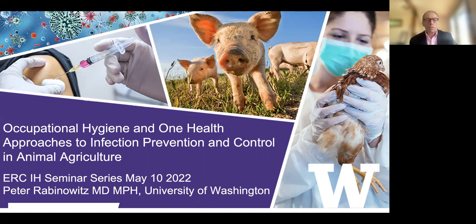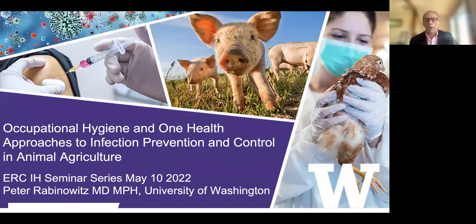Dr. Rabinowitz became more interested in infectious hazards as a type of occupational hazard. Having started out in noise-induced hearing loss and noise control, when he moved to looking at infectious diseases he felt strongly that the industrial hygiene approach — the hierarchy of controls — could really be applied to this. He works a lot on zoonotic diseases, those going from animals to humans, and will focus today on doing this in animal agriculture: at farms, processing facilities, and other points along the food chain.